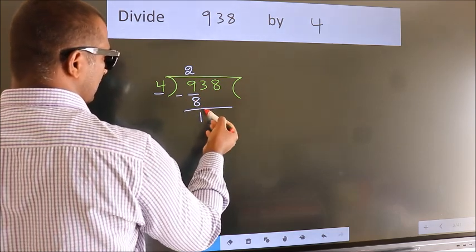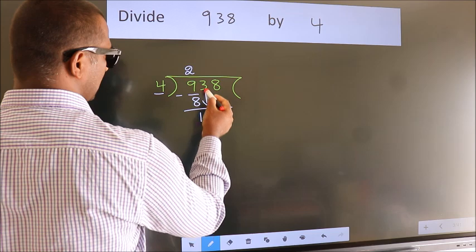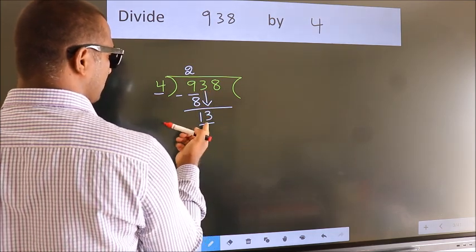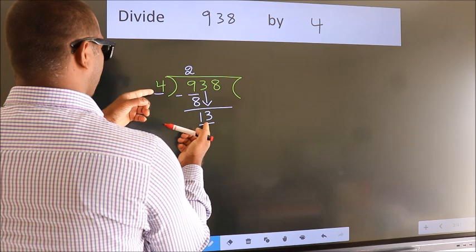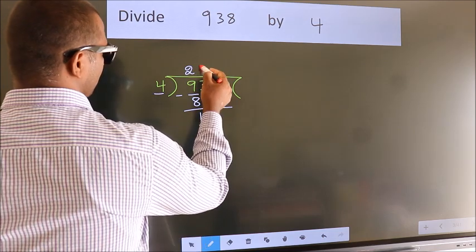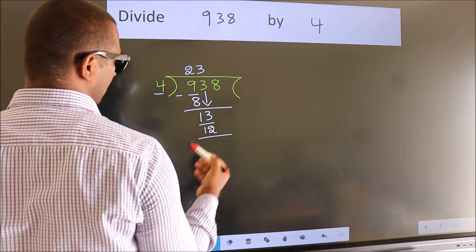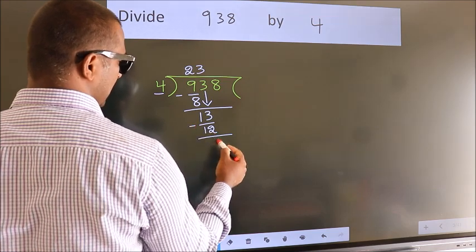After this, bring down the beside number. So 3 down, so 13. A number close to 13 in the 4 table is 4 3s 12. Now we subtract. We get 1.